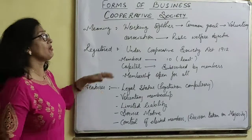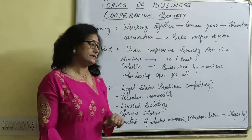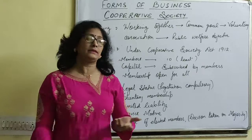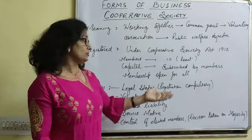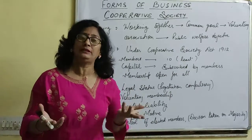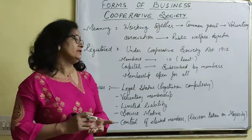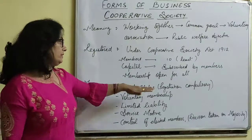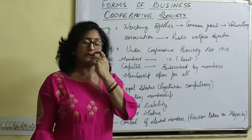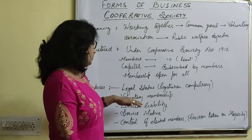The features of cooperative society begin with legal status. A cooperative society has an existence only when it is registered. Until registration is done, the society has no legal existence or incorporation. Therefore, any cooperative society can start their business only after registration.